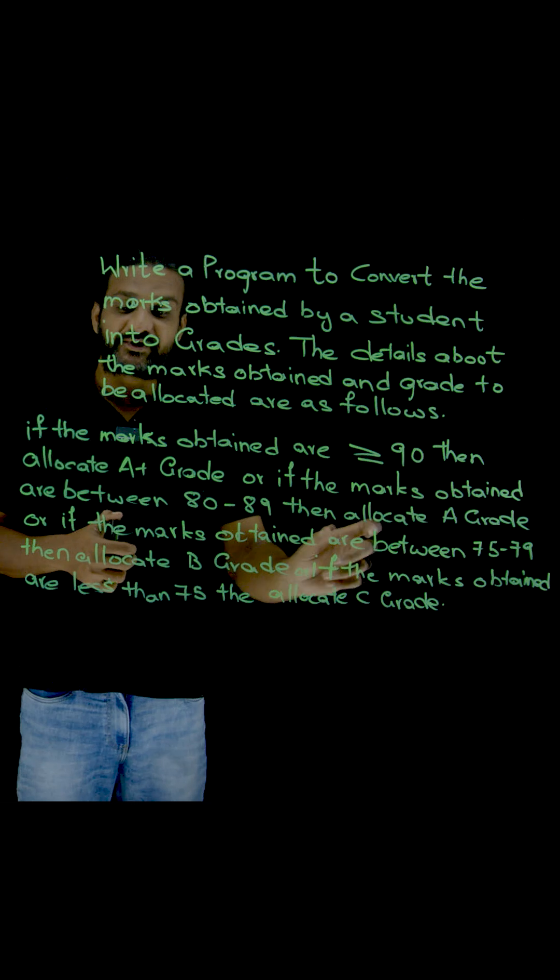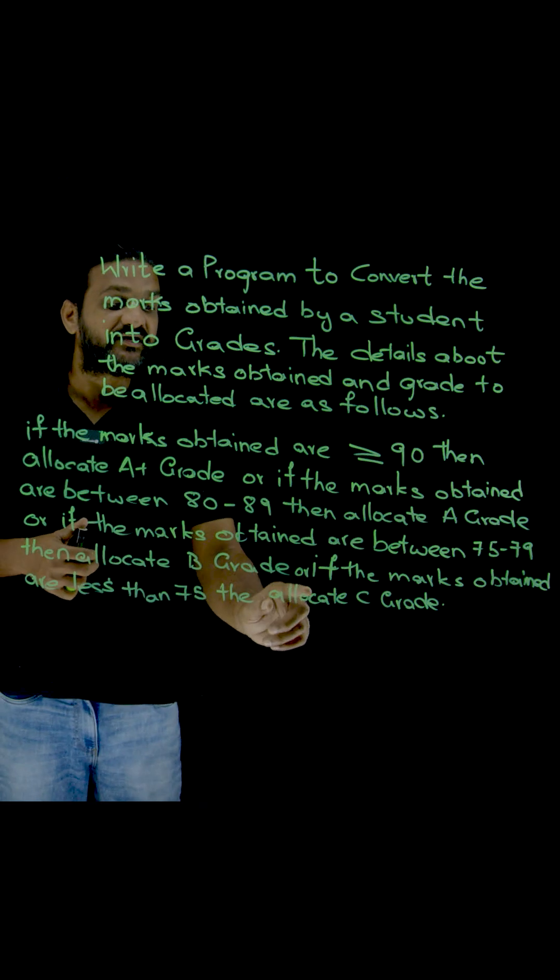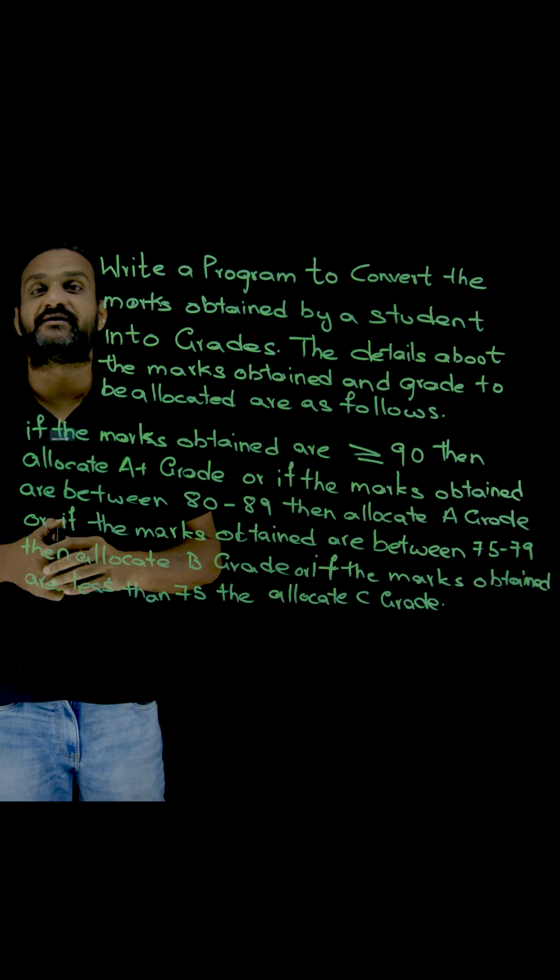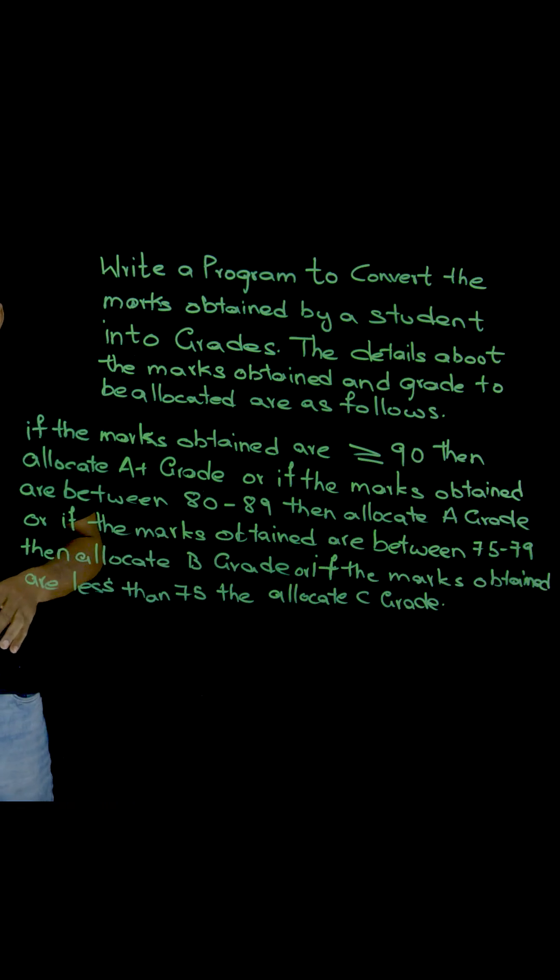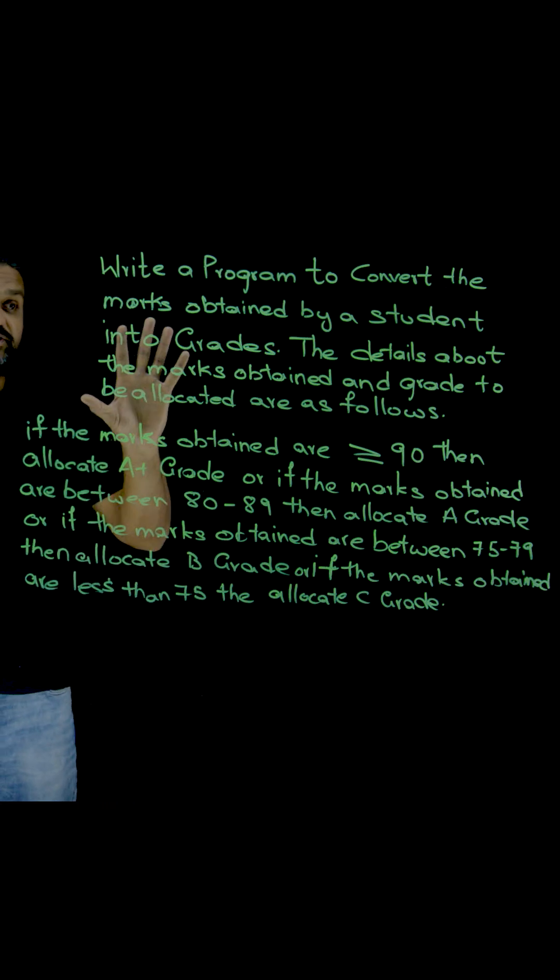Or if the marks obtained are less than 75, then allocate C grade. So this is how we have converted the given tabular form, the problem in the tabular form, into sentences.